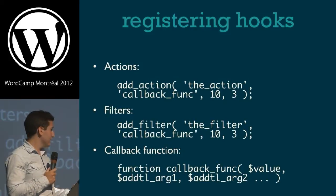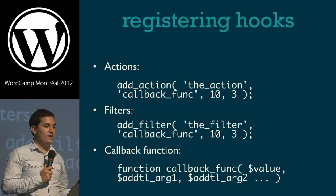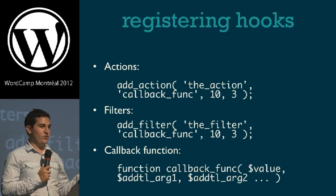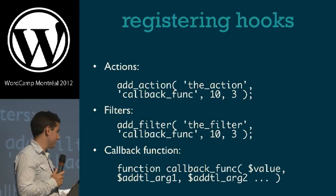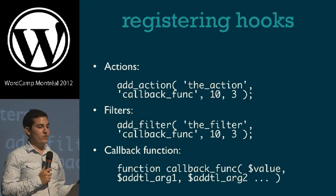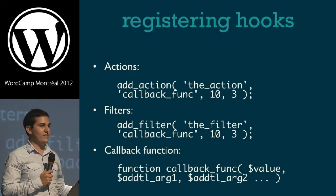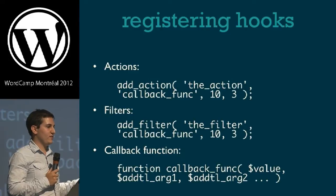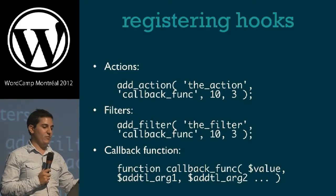Your callback function is declared like any other function. If you're doing a filter, pass in the value you want to filter, plus any additional arguments. Remember that with a filter, you want to return that variable value at the end — since you're doing stuff to that value, you need to return it so that when it goes through the apply_filters function, it gets that variable back.